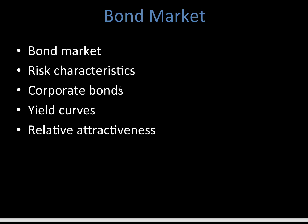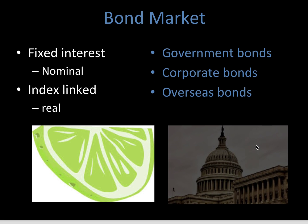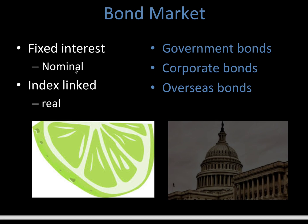So, the bond market. We're going to look at what it is, what are the risk characteristics, what are corporate bonds, a quick look at yield curves, and the relative attractiveness. Essentially, you've got two types: your fixed interest and your index linked. And then there's three people who issue bonds — it's the government, it's the corporate bonds, and bonds that come from outside of your country.